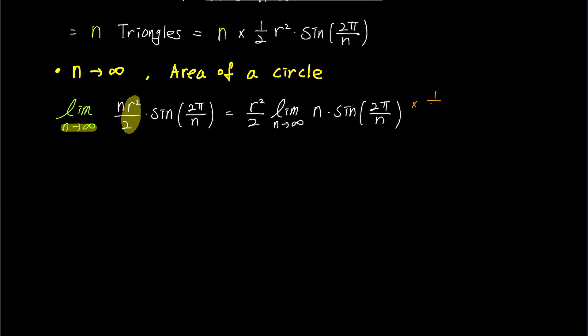To find this limit, let's multiply both the numerator and denominator by 1 over n.